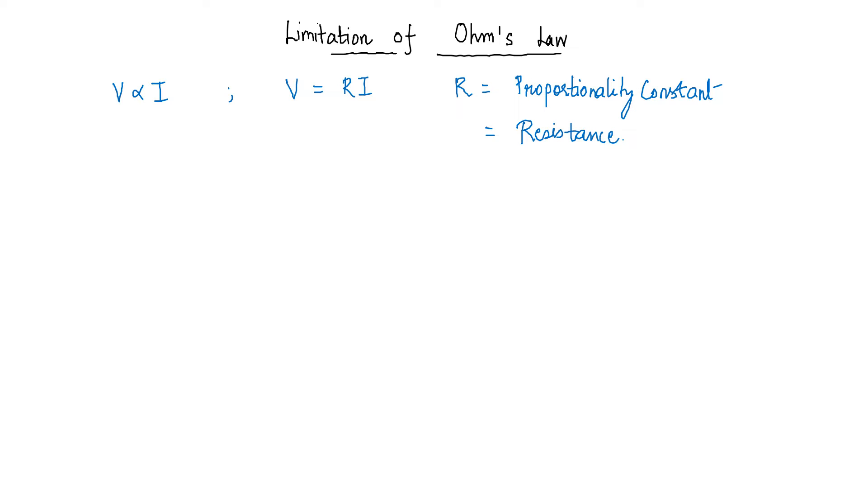Now at any point this Ohm's law gives us the value of either voltage or current or resistance if any of the two values are known. So this is basically the Ohm's law in our current electricity.